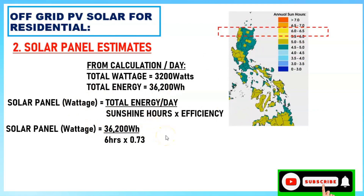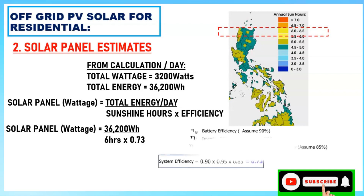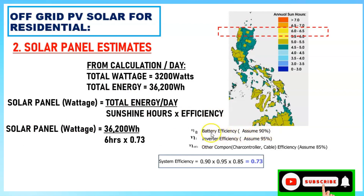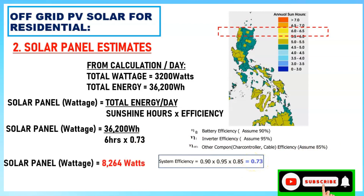This is an assumption — you can verify with your actual area. For the overall efficiency, we consider: battery efficiency at 90%, inverter efficiency at 95%, and controller and cable efficiency at 85%. Combined, we get an overall efficiency of 0.73. So: 36,200 ÷ 6 ÷ 0.73 = 8,264 watts.